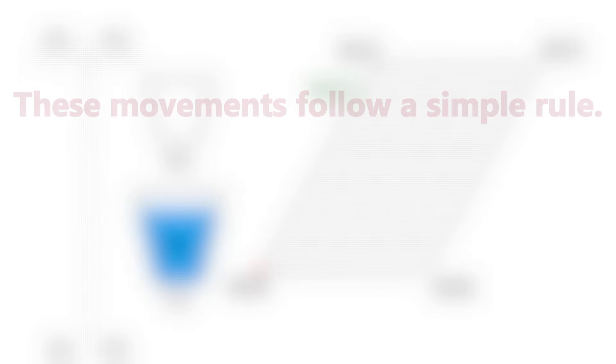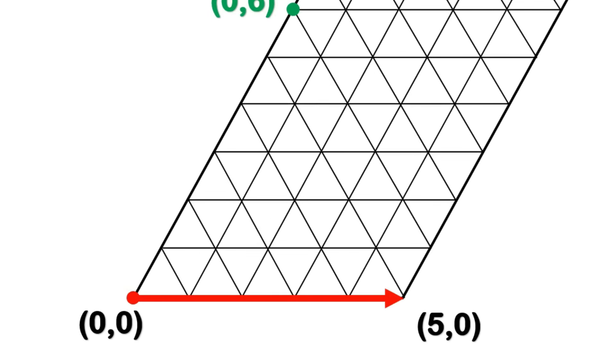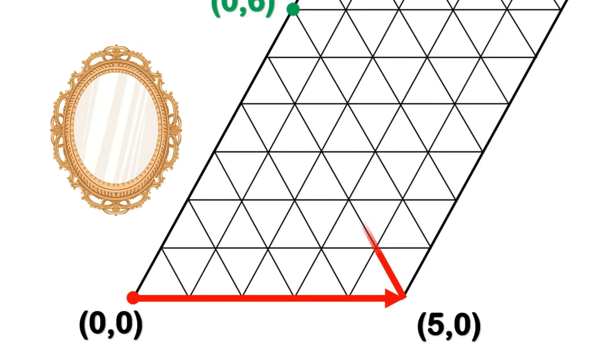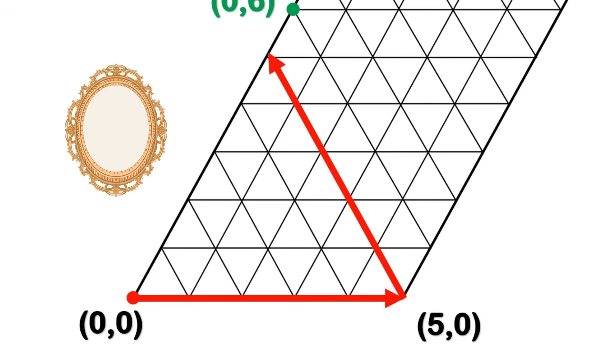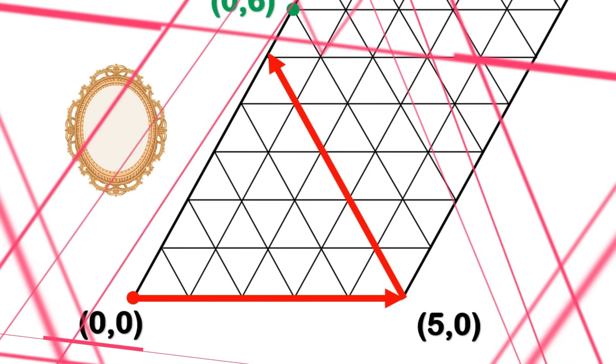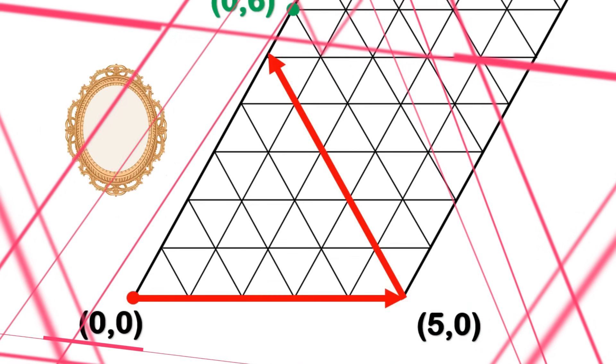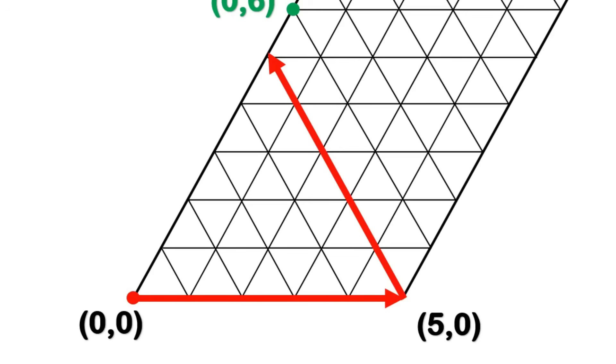These movements follow a simple rule. We start moving with a fixed vector. That vector continues until it must hit one of the edges of the shape, and we're not allowed to stop in the middle. Stopping is only allowed on the edges. And when the vector hits an edge, that's where the mirror reflection rule comes in. Just like light hitting a mirror, the vector reflects off the edge and continues in a new direction with the same angle toward the opposite side. So the path looks like a zigzag. This process keeps repeating until we finally reach the destination.